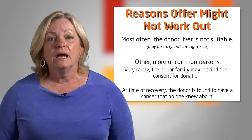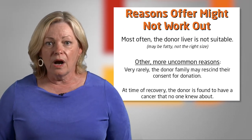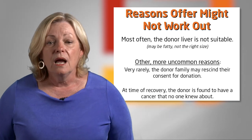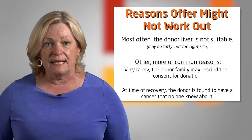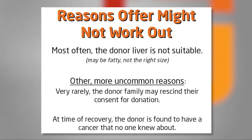Reasons an offer may not work out are many. When we call with an offer, we know a lot about the donor — their age, height, weight, sex, cause of death, and extensive social and medical history. We know they're not HIV positive and know their hepatitis C and B status. What we don't know is what the liver actually looks like. Sometimes when the recovery surgeon sees it in the operating room, it's either fatty or the wrong size. In Georgia, most of the time it's fatty, and fat livers don't transplant well. Less commonly, the donor family may rescind consent, or we may find an unknown cancer — such as a small kidney cancer — making the organs unusable.